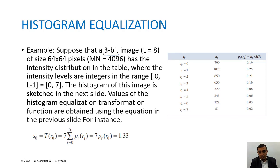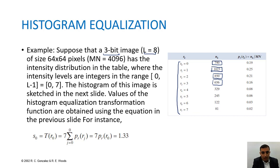For a worked example, suppose we have a 3-bit image where L = 8, so intensity values run from r_0 to r_7. The image is 64×64 pixels, so M×N = 4096. It has an intensity distribution shown in the table, where intensity levels are integers in the range 0 to 7. The histogram of the image is sketched in the next slide.